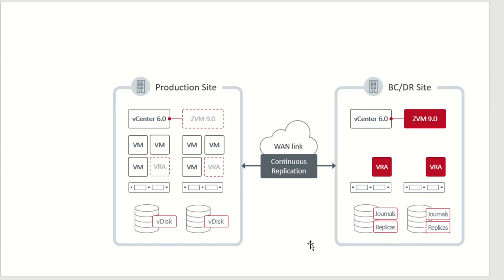We have two ESXi boxes, one vCenter, and one ZVM — that is the Zerto Virtual Manager. We have two ESXi boxes running a couple of VMs, and each ESXi box has a VRA, which we installed in our previous video. We also have a DR site with one ZVM running version 9.0, two ESXi boxes, a local datastore, and a shared datastore. Journals and replicas will be saved on the DR site.